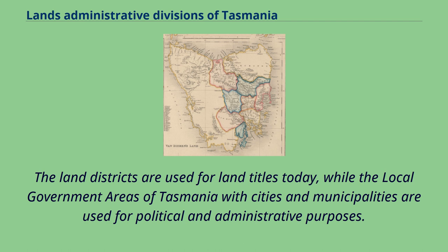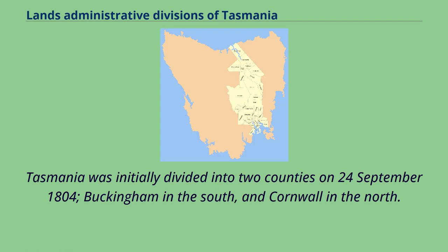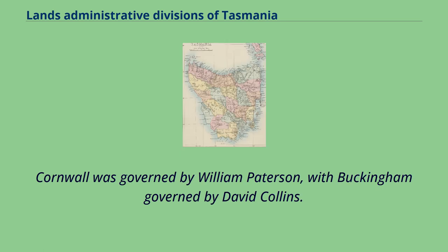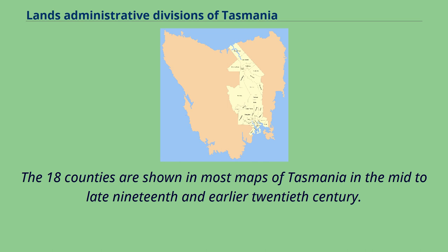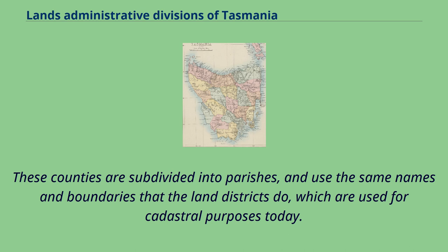The land districts are used for land titles today, while the local government areas of Tasmania — with cities and municipalities — are used for political and administrative purposes. Tasmania was initially divided into two counties on September 24, 1804: Buckingham in the south and Cornwall in the north. Cornwall was governed by William Paterson, with Buckingham governed by David Collins. The 18 counties, shown in most maps of Tasmania from the mid to late 19th and earlier 20th century, are subdivided into parishes and use the same names and boundaries that the land districts do, which are used for cadastral purposes today.